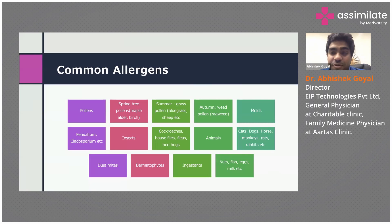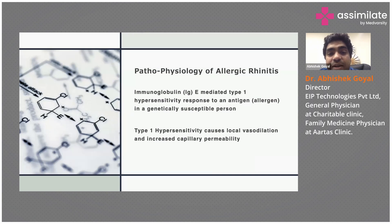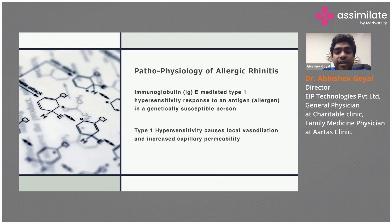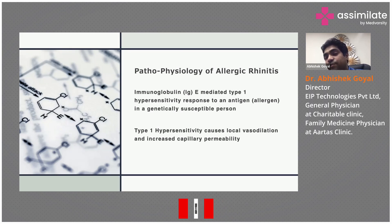The pathophysiology of allergic rhinitis is an immunoglobulin E-mediated Type 1 hypersensitivity reaction to an antigen in a genetically predisposed person. The allergen triggers a Type 1 hypersensitivity reaction, which results in vasodilation and increased capillary permeability, ultimately increasing mucosal secretion.